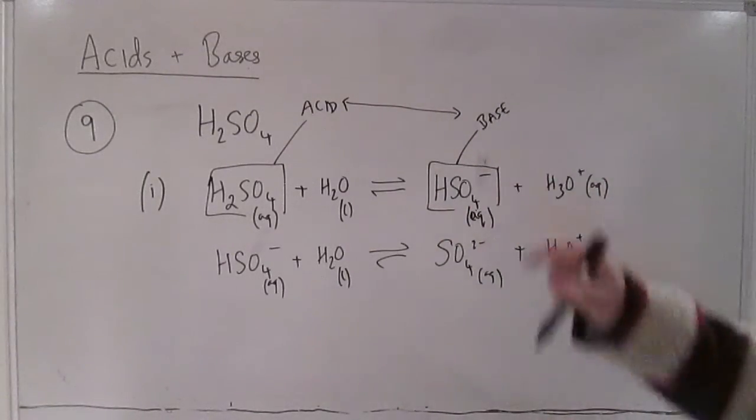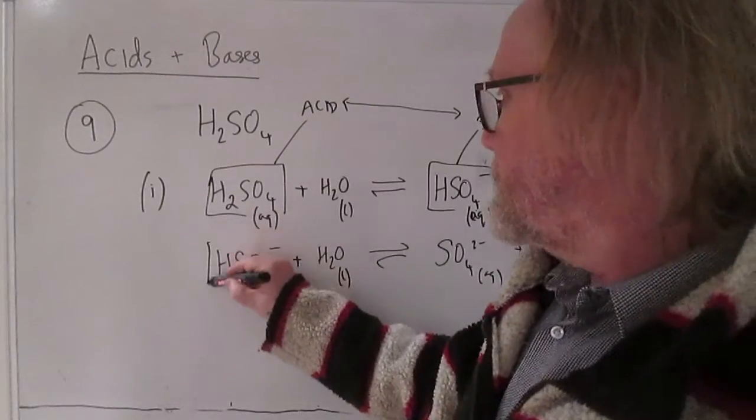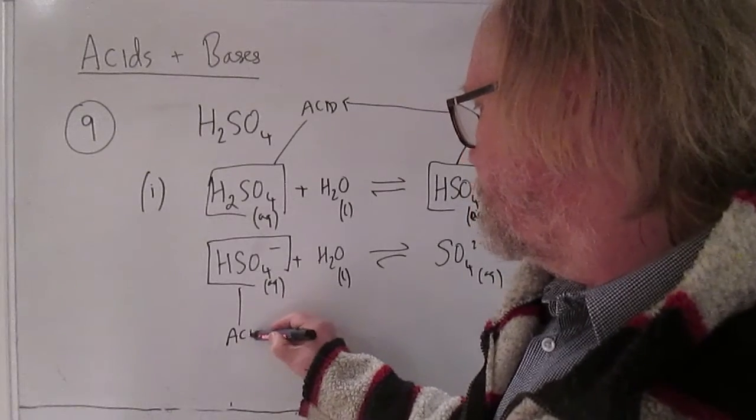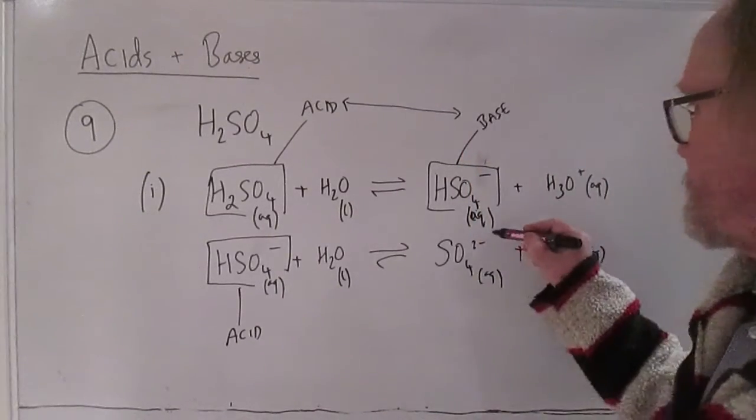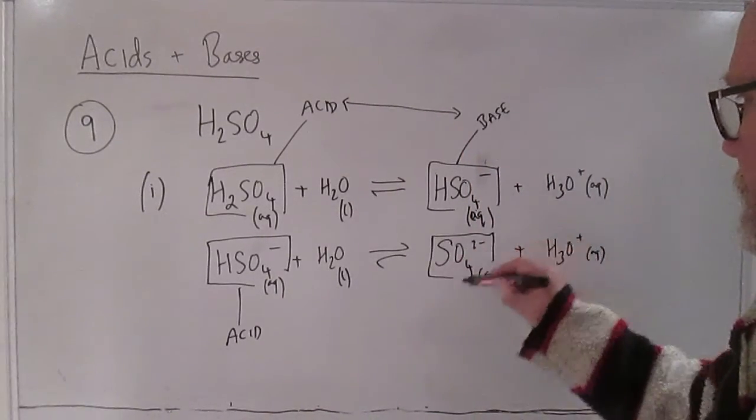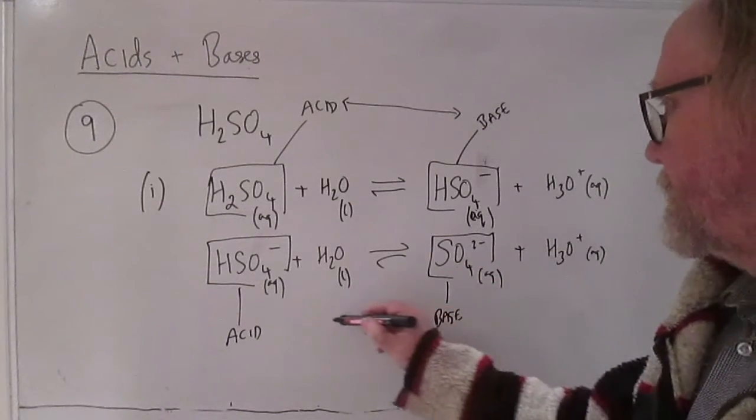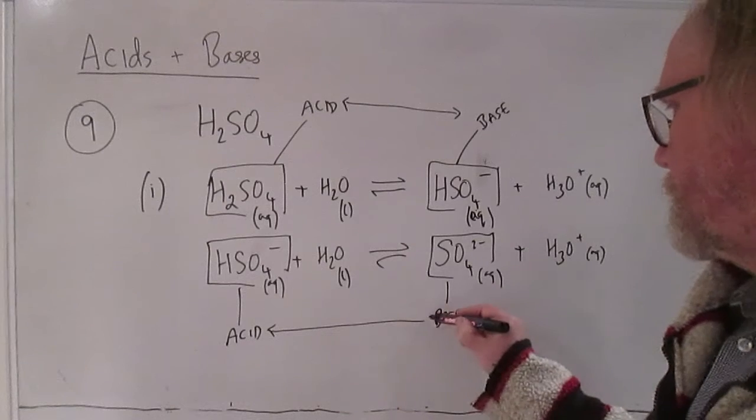But this same ion HSO4 minus in this equilibrium is playing the role of conjugate acid with respect to sulfate which is the conjugate base, so again you've got a conjugate pair there.